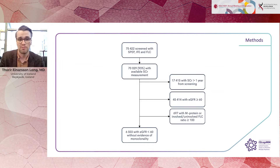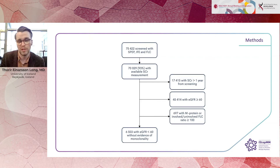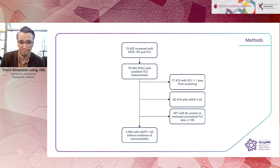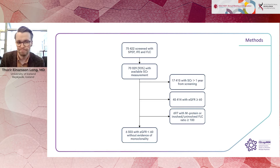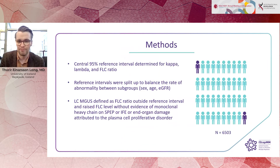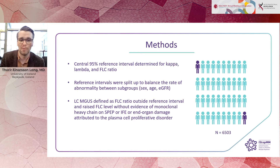This was the ISTPMM study where 75,422 individuals were screened with protein electrophoresis, immunofixation, FLC ratio, kappa, and lambda. We had creatinine measurements, and those with normal kidney function were separated out. This left 6,500 individuals with kidney disease and without evidence of monoclonality. We used the central 95% reference interval and divided the intervals based on the rate of abnormality between subgroups.